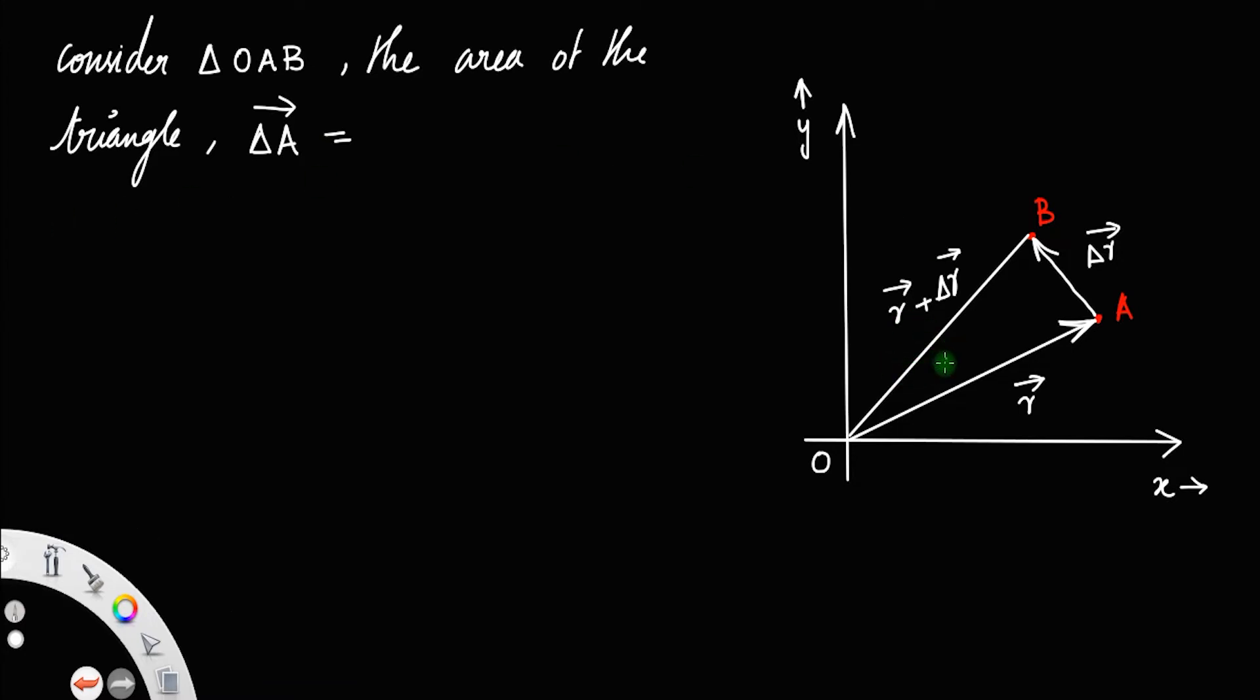Area of any triangle is half the cross product of its adjacent sides, that is 1 by 2 times r cross delta r. That is the expression for area.